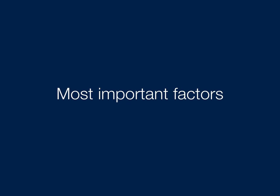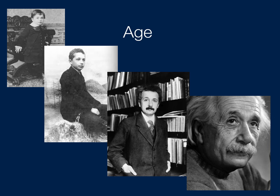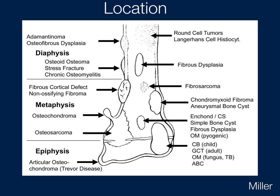The most important factors in assessing a bone lesion on radiography are the age of the patient and the location of the lesion — which bone, where is it within the bone, is it central, distal, etc.